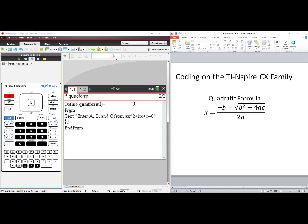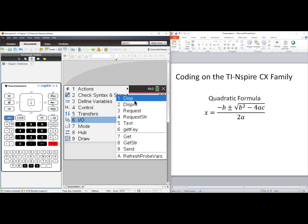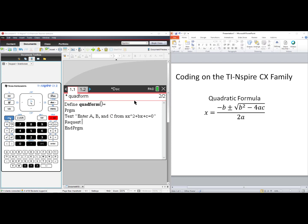We now need to collect A, B, and C from the user. Press Menu, arrow down to number 6, Input Output, and choose number 3, Request. Press Ctrl-Multiply to get our quotes, and we can write A equals, right arrow to get out of the quotes, comma, and the variable will be A. Enter.